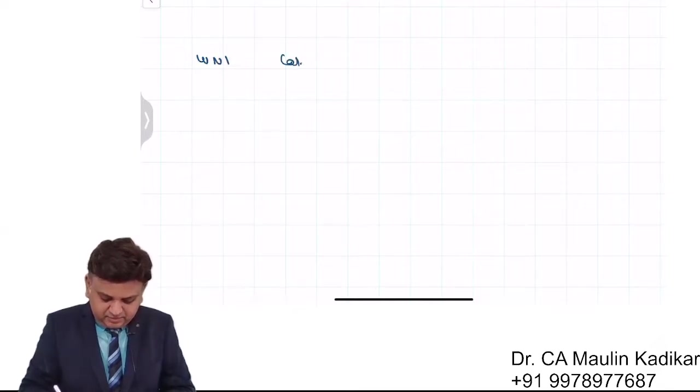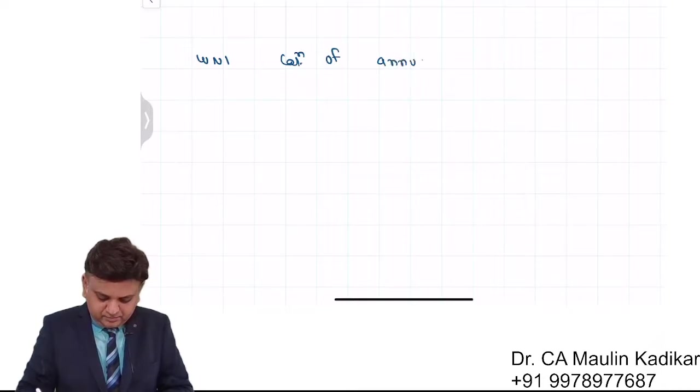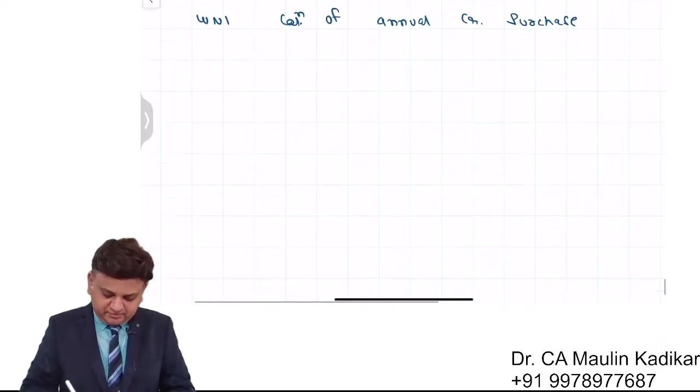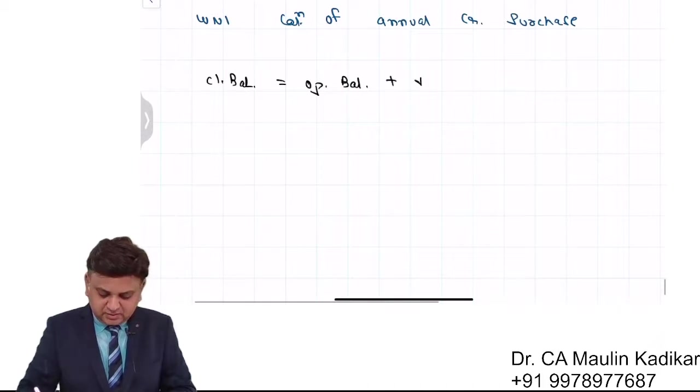Key note number one: calculation of annual credit purchase. It will be found like this - closing balance is equal to opening balance plus purchase minus collection.